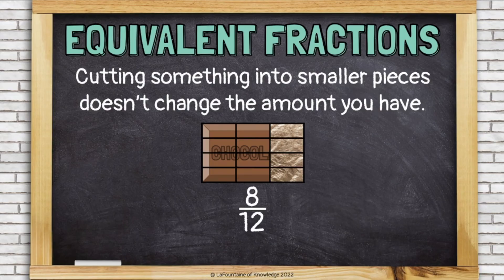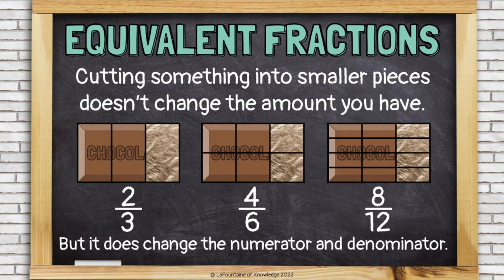Let's cut them again. Now I have eight pieces of a chocolate bar that was cut into twelve total pieces: eight-twelfths. But it's the same amount of chocolate. All of these fractions are equivalent — it's the same amount of the whole. But cutting things into smaller pieces does change the numerator and denominator.